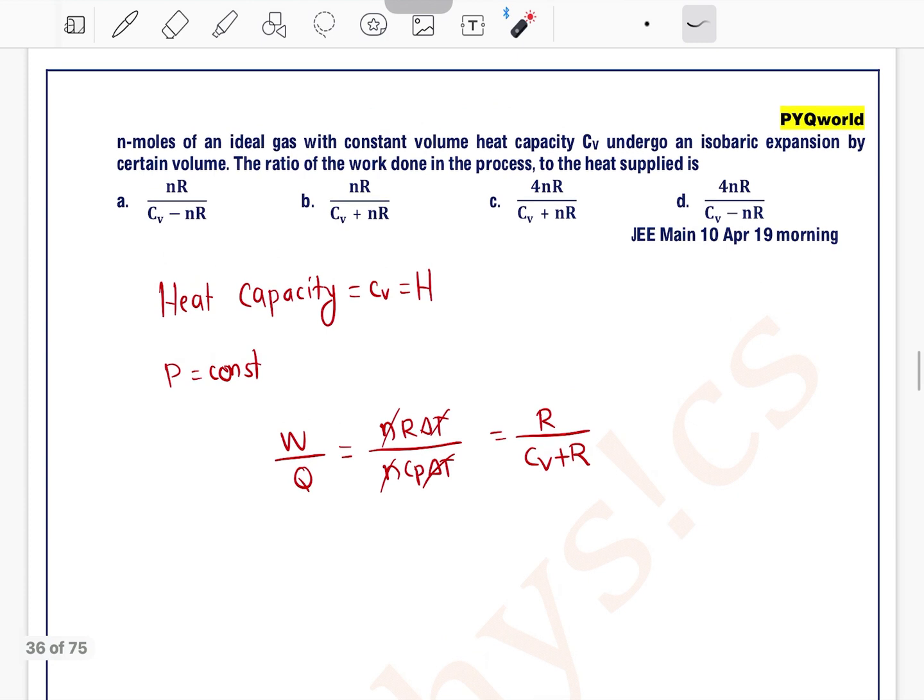Now there's one important point here: this Cv represents specific heat capacity at constant volume, and this small Cv given in the problem represents heat capacity.